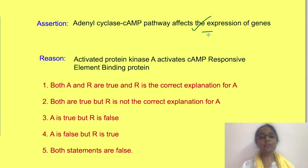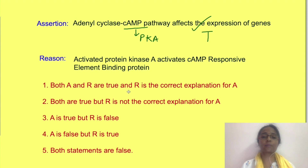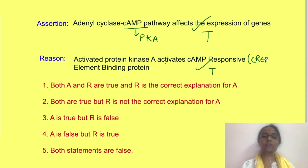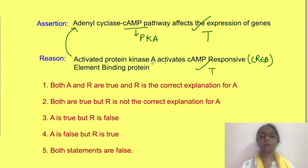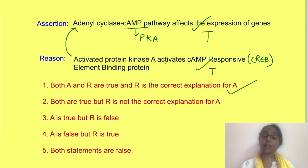Now let's come back to our original question. The assertion is a true statement — the cAMP pathway activates protein kinase A, which affects intracellular proteins and also moves to the nucleus to affect gene expression. The reason is also correct because PKA activates CREB protein, which then binds to the CRE region and affects gene expression. That is how the adenyl cyclase pathway affects gene expression. So the answer is the first option: both A and R are true, and R is the correct explanation for A. Thanks for watching — if you liked it, do not forget to subscribe to Physiology Open.